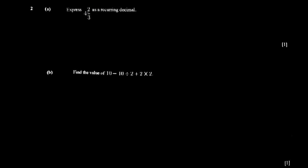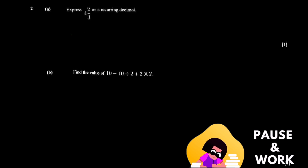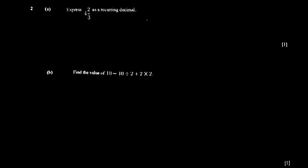Question two says: express four and two thirds as a recurring decimal. The decimal part comes from the fraction. You write four and two thirds as four plus two over three. You don't need to deal with the four directly. Dividing: three into two gives zero, then three into 20 gives six with remainder two, then three into 20 again gives six with remainder two — and this keeps repeating.